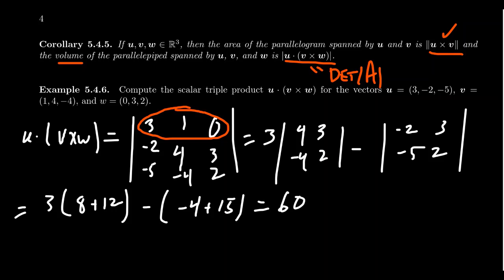And then we end up with 15 take away 4 which is 11, so we get a negative 11. And then 60 take away 11 gives us 49. So that's the triple product which would measure the volume of a parallelepiped and things like that.